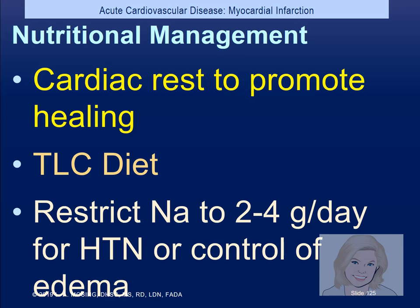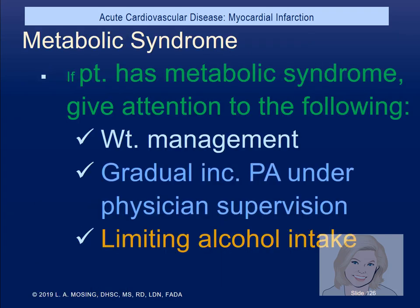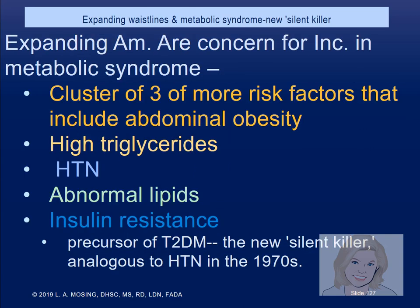With a myocardial infarction, our goal is to take pressure off the heart. We give a liquid diet for the first 24 hours, then restrict to small frequent meals. We also give more omega-3 to reduce the risk of clots. Nutritionally, we let the heart rest and give them the therapeutic lifestyle change diet. Sodium is restricted to current guidelines — most patients will be consuming too much. If the patient has metabolic syndrome, we focus on no alcohol, more exercise under doctor's advice, and weight management.